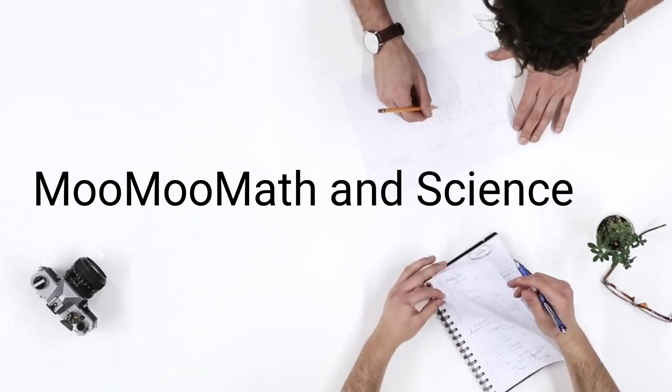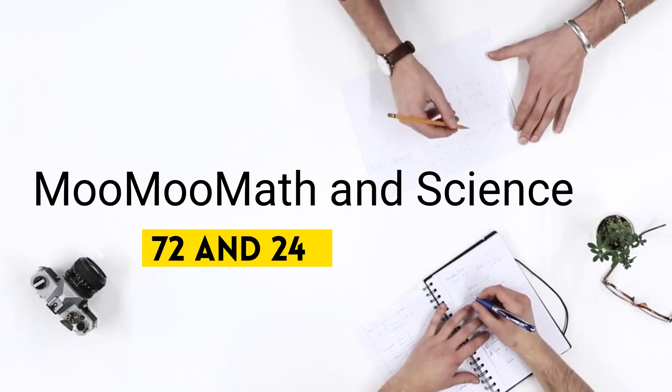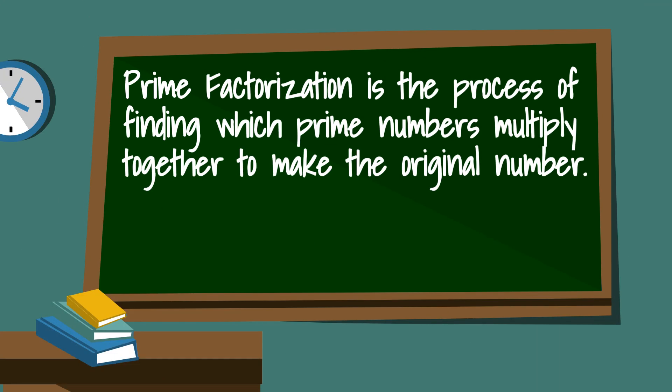Welcome to Moo Moo Math and Science and the prime factorization of 72 and 24. Prime factorization is the process of finding which prime numbers multiply together to make the original number.